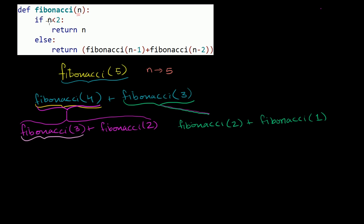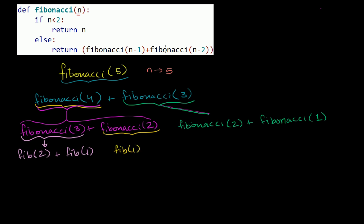Fibonacci of 3: n=3 is not less than 2, so it reduces to Fibonacci of 2 plus Fibonacci of 1. And then Fibonacci of 2: 2 is not less than 2, so we return Fibonacci of 2 minus 1, which is Fibonacci of 1, plus Fibonacci of 2 minus 2, which is Fibonacci of 0. So Fibonacci of 2 breaks down into those two calls.